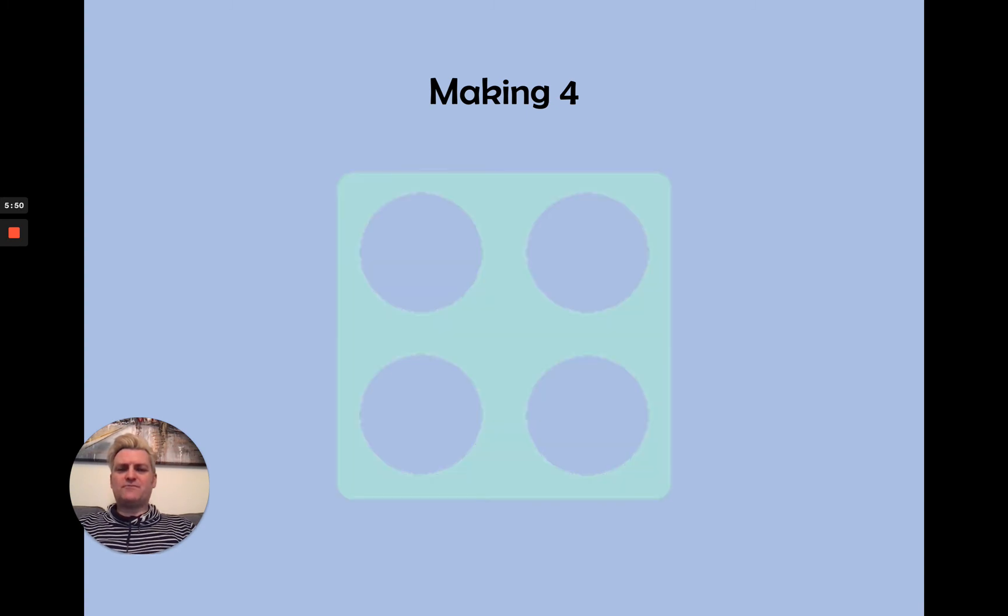Here's four again. I'm going to try and make it in a different way this time. So I'm going to start with a three. What do I need now to make three become four? Can you see what's still not covered up yet? I need the number one. And there it is. So I can make four with three and one.